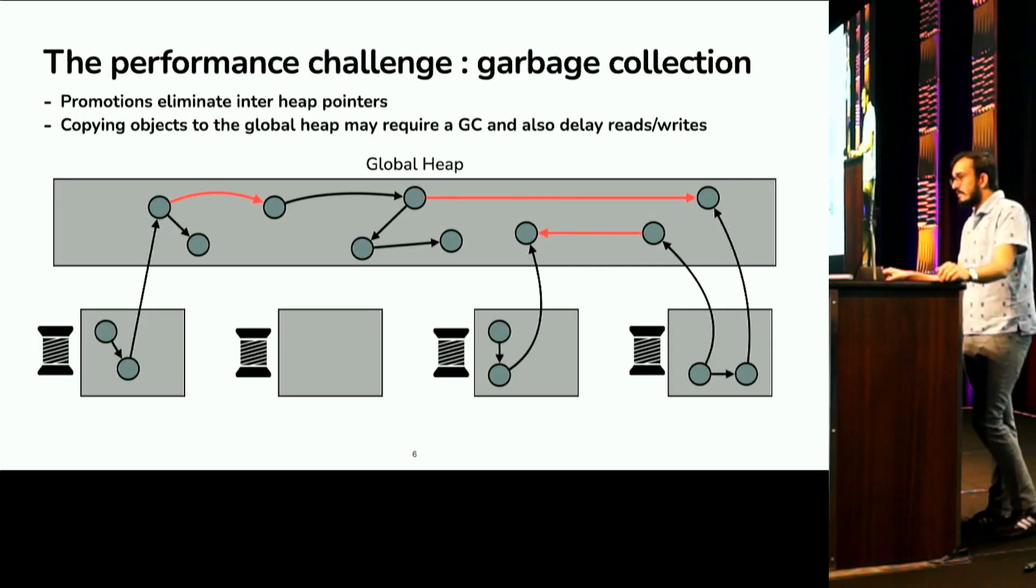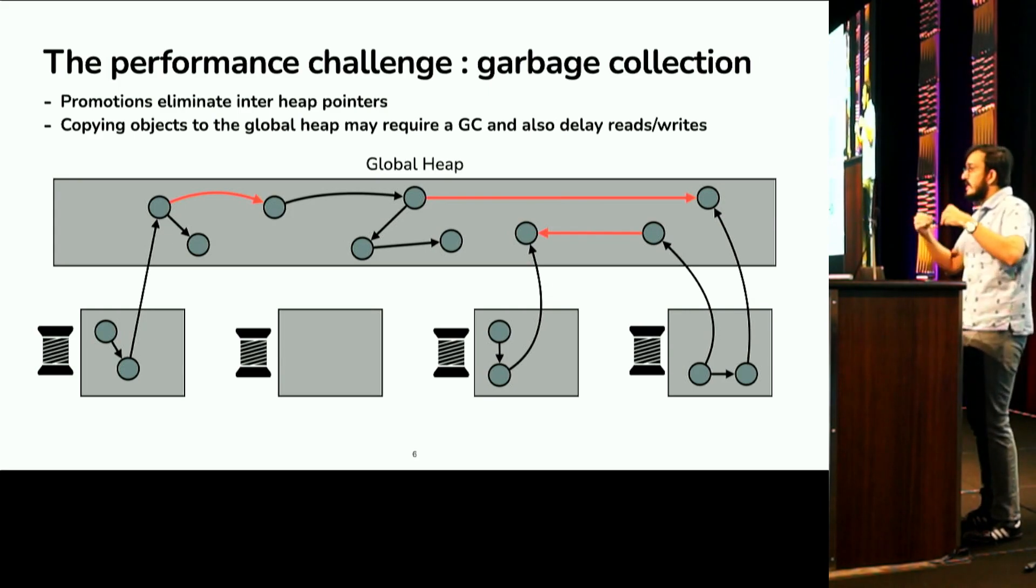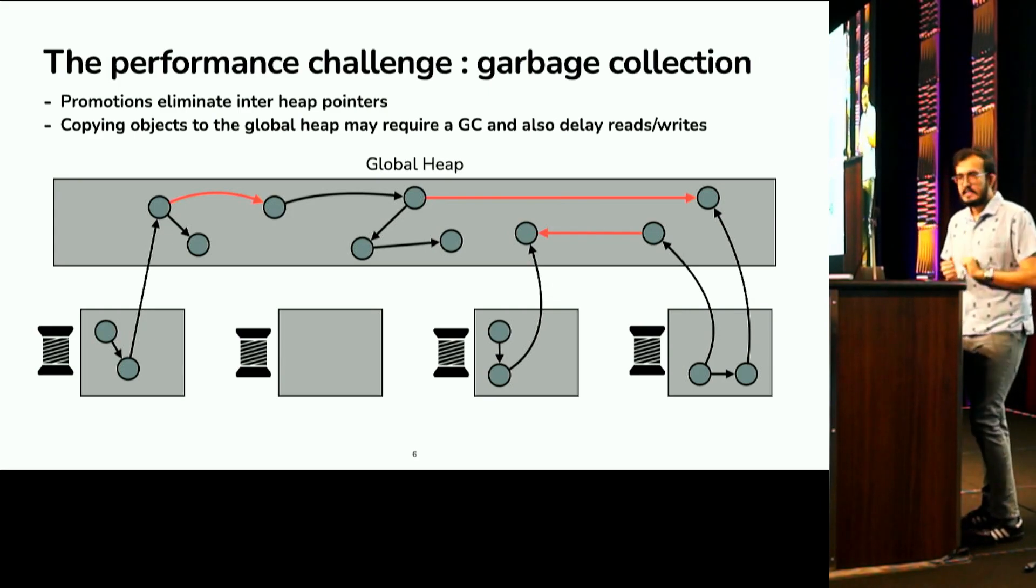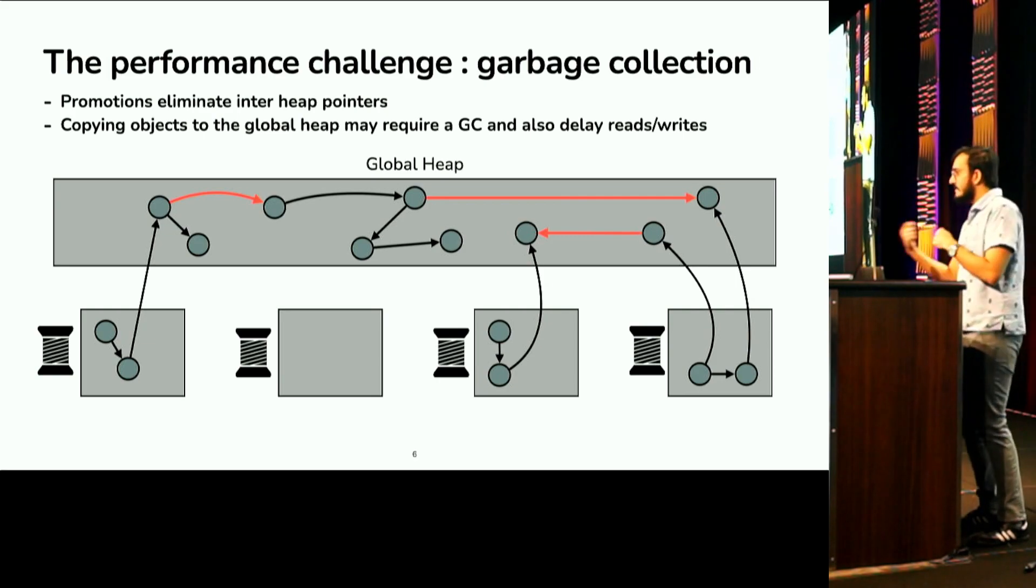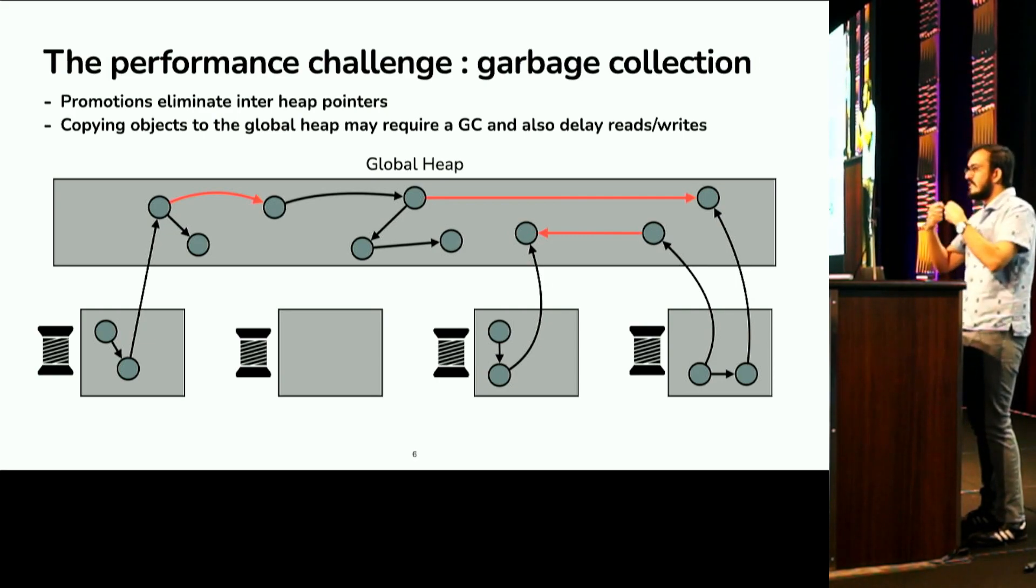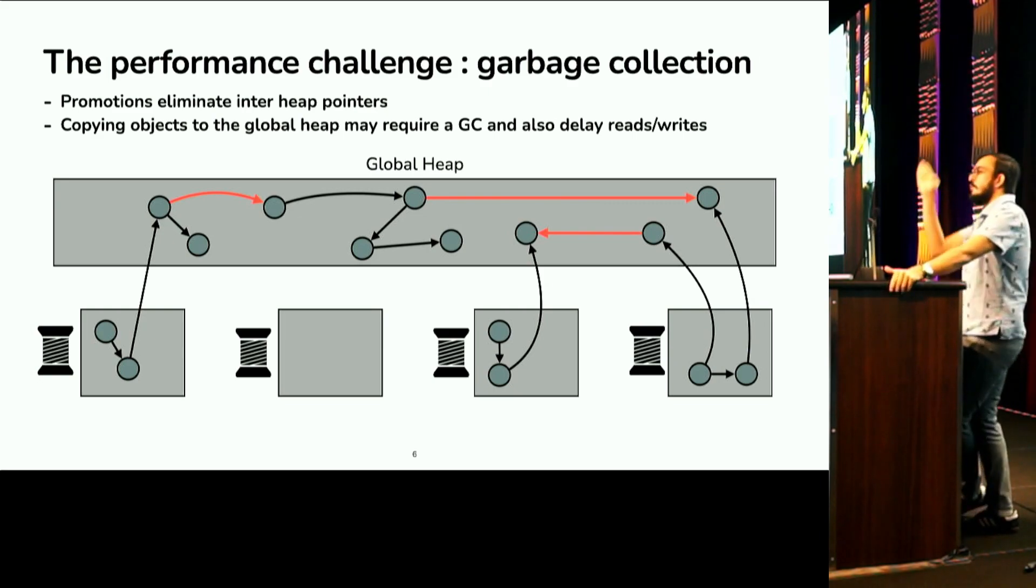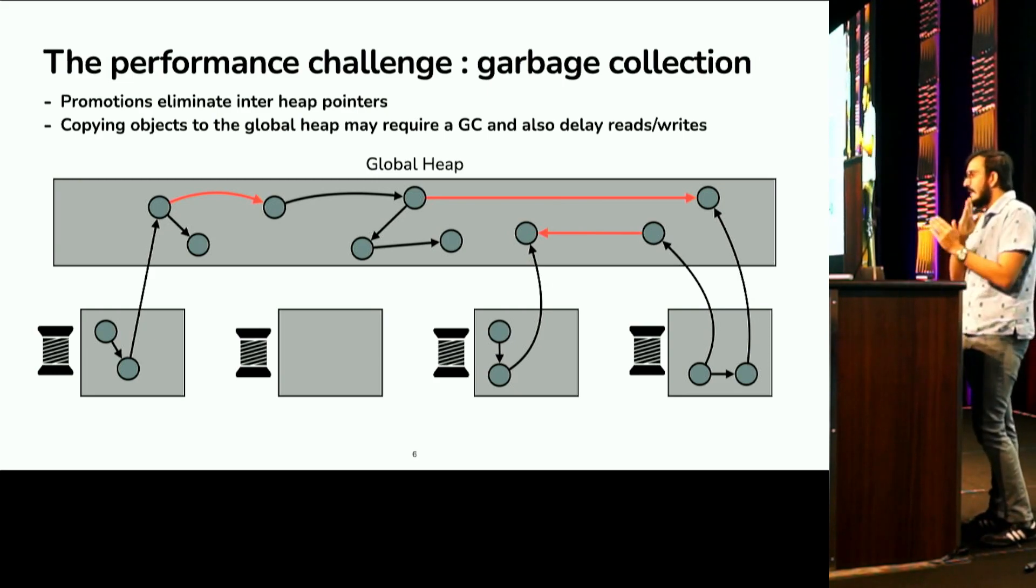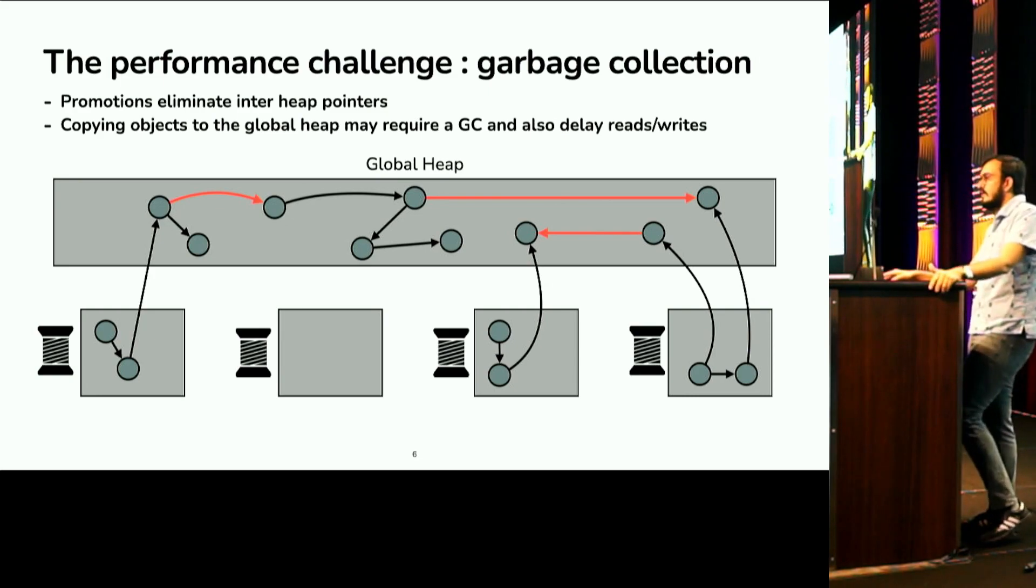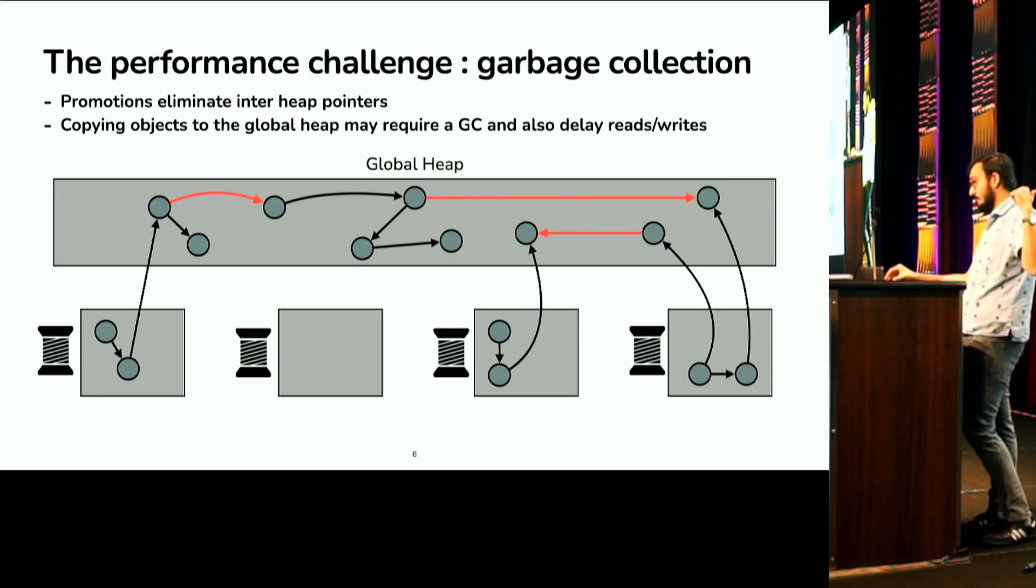The other technique that people have come up with is called promotions, where the idea is that you eliminate these inter-heap pointers by copying objects to a shared global heap. So, anytime that you're about to create an inter-heap pointer, the system will have a read barrier or a write barrier that will detect the creation, and copy both the participating objects to a shared global heap. And when you do that, you also have to update the old pointers that point to the old objects to point to the new, copied objects. The problem with this is that you basically have to scan the heap in order to figure out all the pointers. So, a read or a write could trigger a garbage collection, which amplifies the work cost.